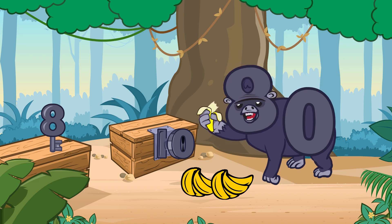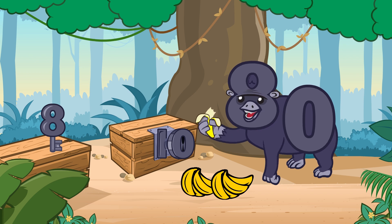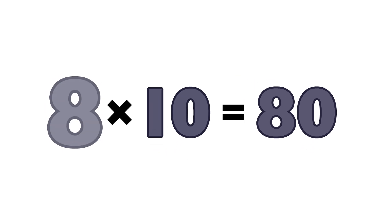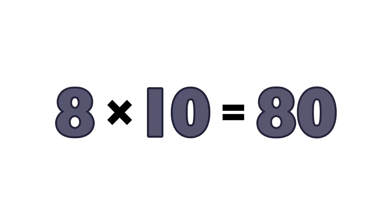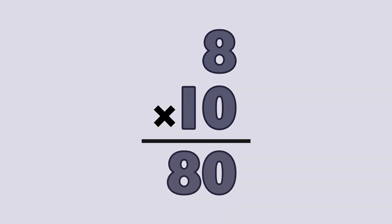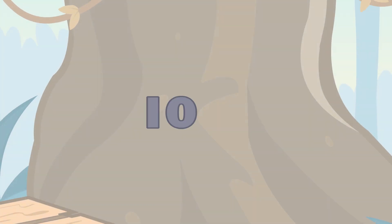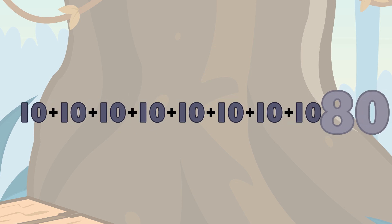Eight times ten equals... Eighty. Eight times ten equals... Eighty. Eight times ten equals... Eighty. Eight tens equals... Eighty.